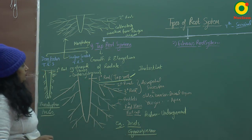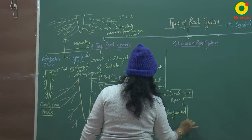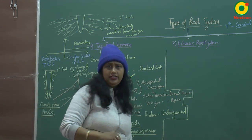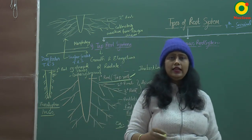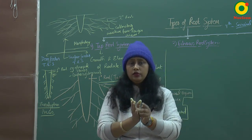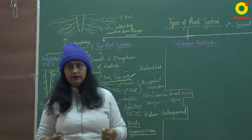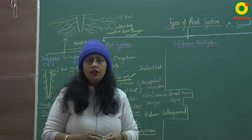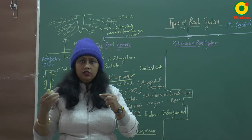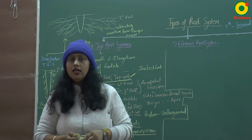Another type of root system is the fibrous root system. In this system, the primary root arises from the radicle, but soon it degenerates. After that, from the base of the stem, fine hair-like roots arise which are very thin and almost of equal length, giving a fiber-like appearance. That is why they are known as fibrous roots.